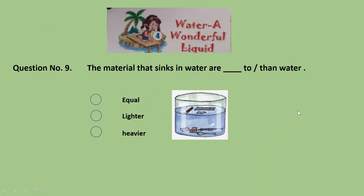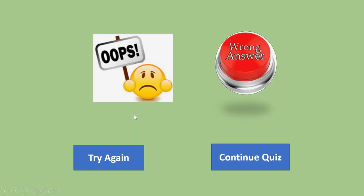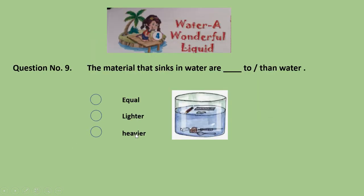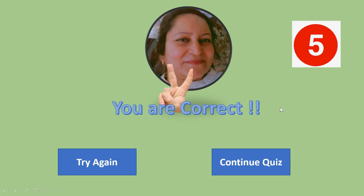Question 9, the second-to-last question: The materials that sink in water are DASH to or than water — equal to, lighter than, or heavier than water? You can see in the picture — lighter? Wrong. Heavier? Correct! Heavier is the correct answer. Give yourself 5 marks.